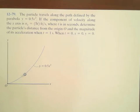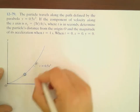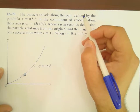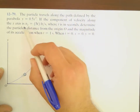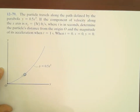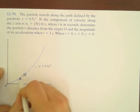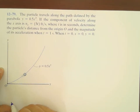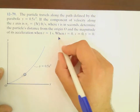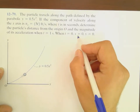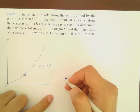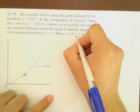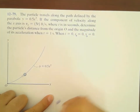Good evening and welcome to this new tutorial in Dynamics — the third lecture related to describing the curvilinear motion of a particle in the XY plane system. In this question, the path of the particle in the XY plane is given as a function of X, and the X component of the velocity is given as a function of time. We are required to find the distance from the origin point to the particle, and also the magnitude of the acceleration when time equals one second. The initial conditions given are: at time equals zero, X equals zero and Y equals zero.